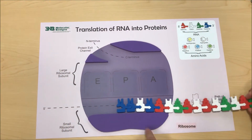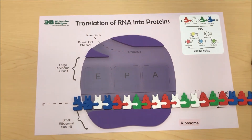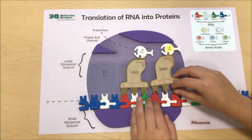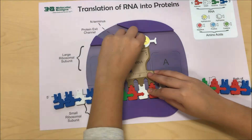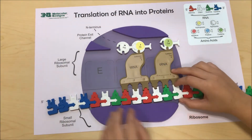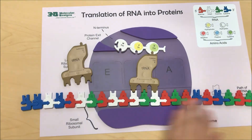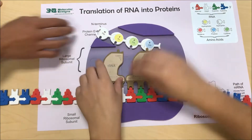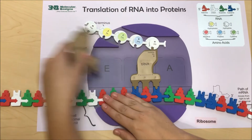Translation is the synthesis of a protein from an RNA template. The three types of RNA are messenger RNA, ribosomal RNA, and transfer RNA. Messenger RNA is a temporary copy of the information found in DNA. Ribosomal RNA is a structural component of ribosomes which make proteins. Transfer RNA carries the amino acids to the ribosome so that they can be assembled. Inside a tRNA molecule will be an anticodon that ensures that the amino acid being carried is added to the growing polypeptide chain.